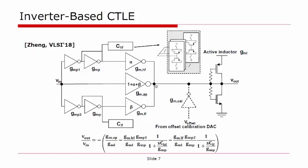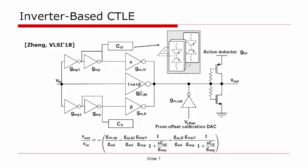A full CTLE circuit using the previously mentioned building blocks is shown in this figure. Three GM paths share the same active inductor load. The main path, shown in the middle, has a wideband frequency response. In the upper path, the low-frequency component of the signal is subtracted from the main path, effectively forming high-frequency boosting. The cutoff frequency is defined using programmable capacitance shown as CHF. Similarly, the bottom path also subtracts the low-frequency component from the main path using a different cutoff frequency, effectively forming mid-frequency boosting.